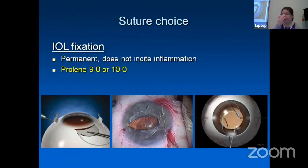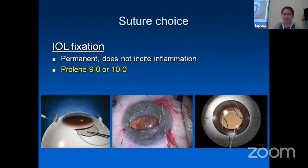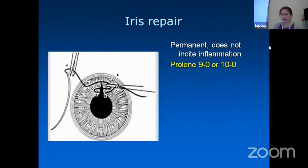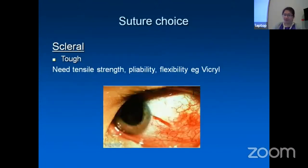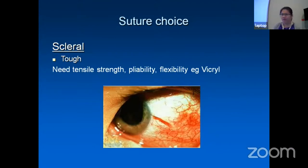Newer sutures like Gore-Tex (Vortex) are preferable because they last longer than standard Prolene. For iris repair, Prolene 9-0 or 10-0. For sclera, you need sutures with tensile strength, durability, and flexibility, such as Vicryl. For scleral laceration or TNS, you can use Vicryl 7-0 or even 8-0.